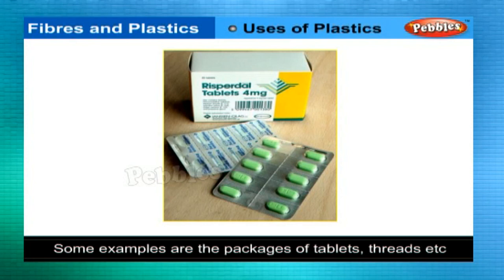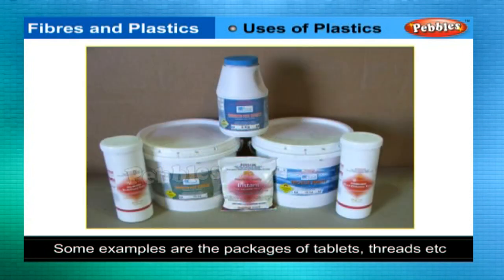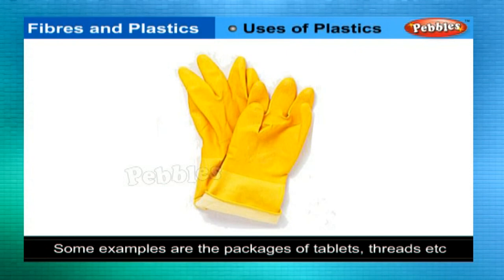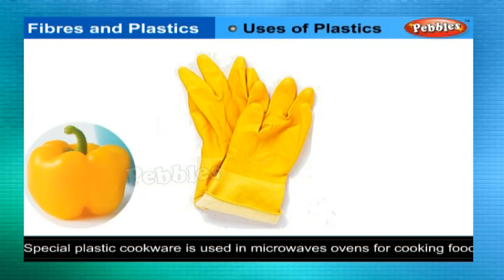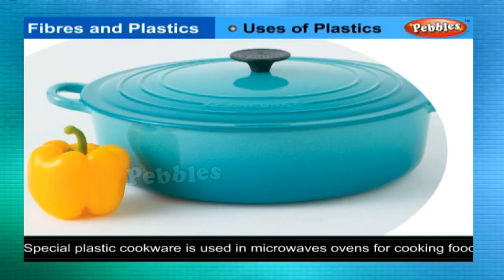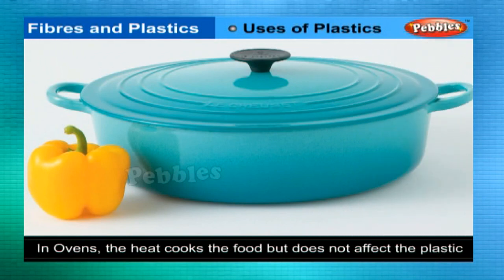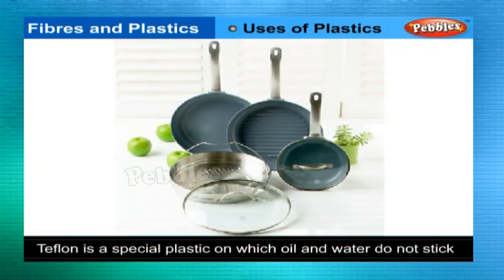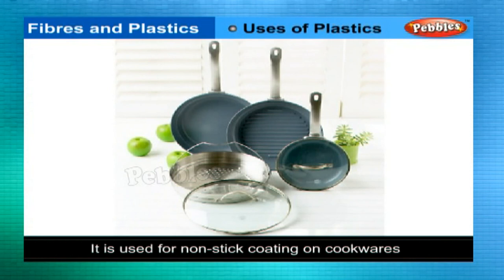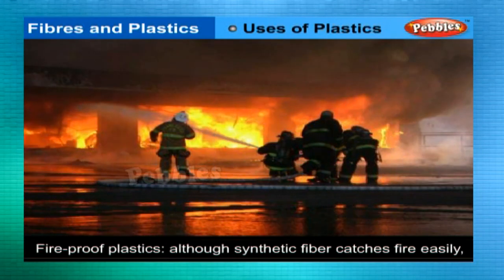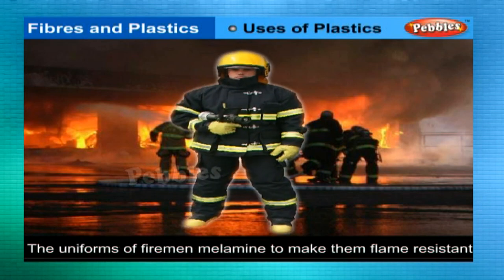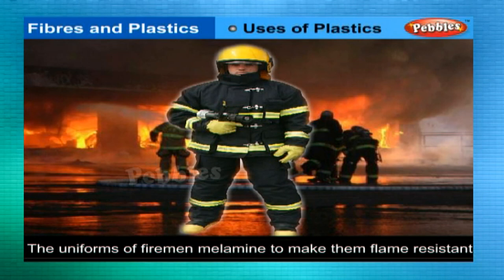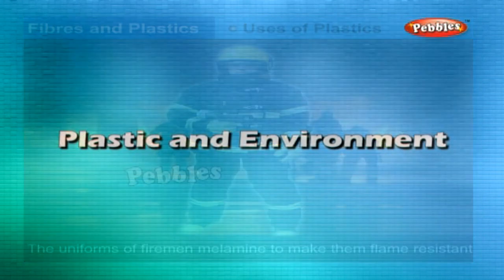Uses of plastics: plastic finds extensive use in the healthcare industry — for example, packages of tablets, threads used for stitching wounds, syringes, doctor's gloves, and medical instruments. Special plastic cookware is used in microwave ovens, where heat cooks the food but does not affect the plastic vessel. Teflon is a special plastic on which oil and water do not stick; it is used for non-stick coating on cookware. Although synthetic fiber catches fire easily, uniforms of firemen have a coating of melamine plastic to make them flame-resistant.